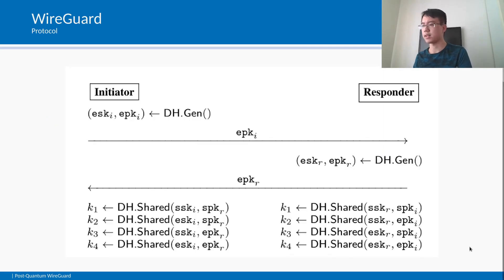To start a handshake, Alice generates an ephemeral X25519 key pair. By combining Bob's long-term public key with her long-term and ephemeral private key, she can compute two Diffie-Hellman results, K1 and K2, which are mixed into the chaining key material. When Bob receives the ephemeral public key from Alice, he can compute K1 and K2 similarly. Hence, after the first packet of the handshake, Alice and Bob share two secret Diffie-Hellman results.